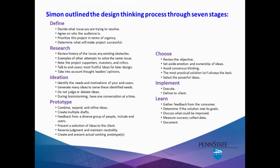Simon outlined the design thinking process through seven stages. Under the Define stage, the first bullet says decide what issue you're trying to resolve, and the fourth says determine what will make the project successful. Under Research, the last bullet says take into account thought leaders' opinions. Under the Ideation phase, identify the needs and motivations of your end users. Under Prototype, seek feedback from a diverse group of people, including end users. Under Choose, set aside emotion and ownership of ideas. And under Learn, determine if the solution met its goals.